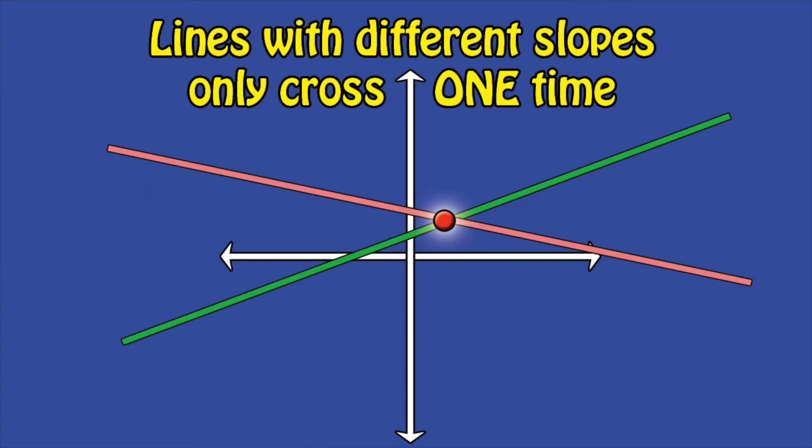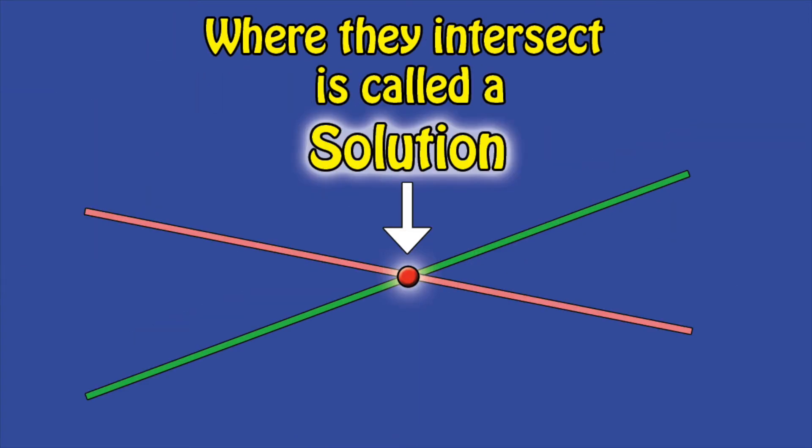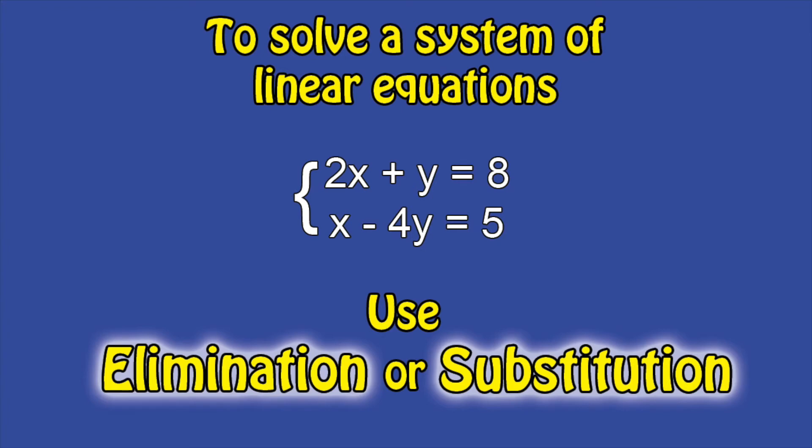Lines with different slopes only cross one time. Where they intersect is called the solution. To solve a system of linear equations, you can use elimination or substitution.